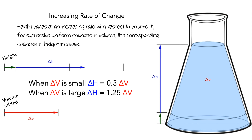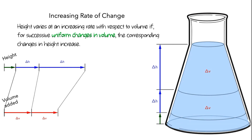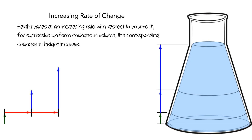I'll add some lines to show the connection between the amounts of change in volume and the corresponding amounts of change in height. Let's think about the idea of uniform changes in volume. To do this, let's split the amount of change in volume into two equal-sized parts — two successive uniform changes in volume. Next, to make things a little easier to see, let's rotate the height bar. For the first amount of change in volume, the amount of change in height is about 3 quarters as large as the amount of change in volume. For the second fixed amount of change in volume, the amount of change in height is roughly twice as large. So for these two successive uniform changes in volume, the corresponding changes in height are increasing.